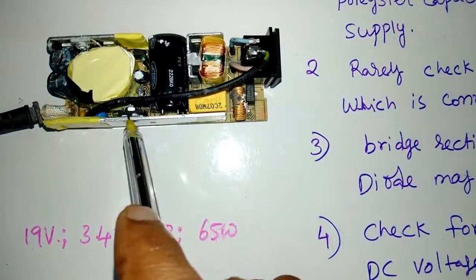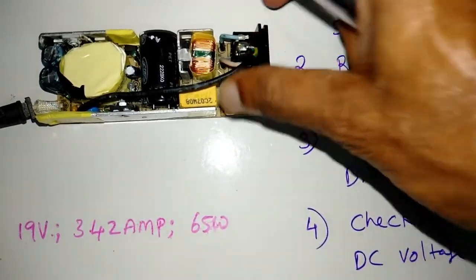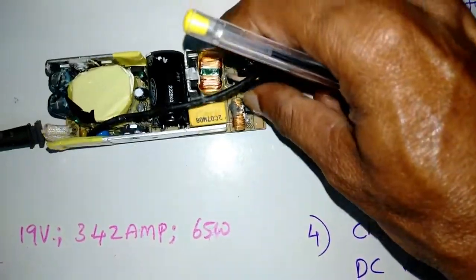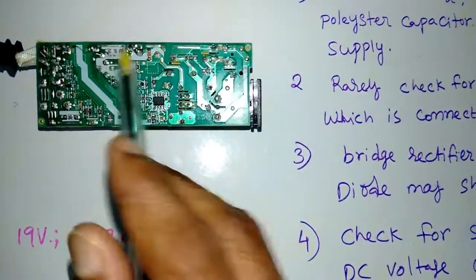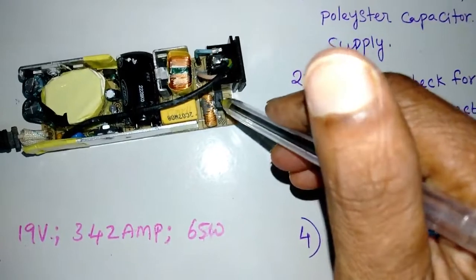This one, main switching MOSFET, main switching output switching transistor. It may short also, and this fuse may blow up.